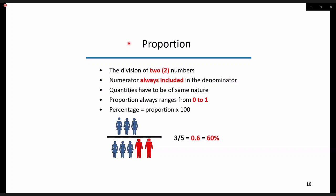A proportion, on the other hand, is also a quotient of two numbers, but it is a special ratio. The numerator is always included in the denominator. As you can observe, the three female individuals in the numerator are also in the denominator together with the two male individuals. The quantities have to be of the same nature. The proportion always ranges in value from 0 to 1, and the percentage is calculated from the proportion multiplied by 100. For example, three out of five individuals are female, so the proportion of females in this group is 60%.